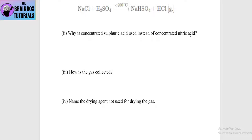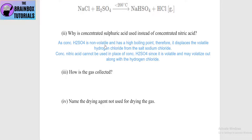Concentrated H2SO4 doesn't evaporate, so it displaces the volatile hydrogen chloride gas from the salt sodium chloride. Concentrated nitric acid cannot be used in place of concentrated H2SO4 since it is volatile — it would volatilize out along with the hydrogen chloride gas.